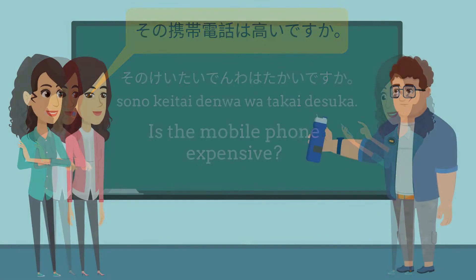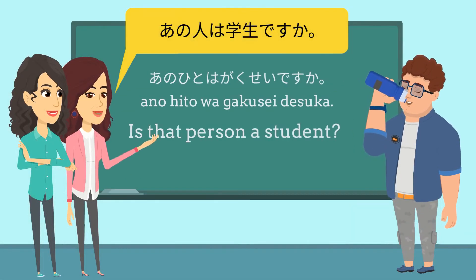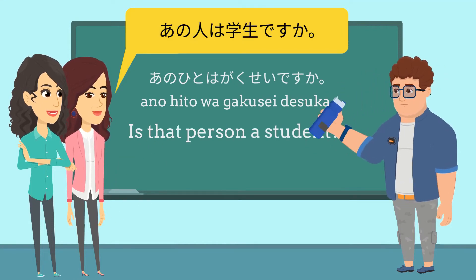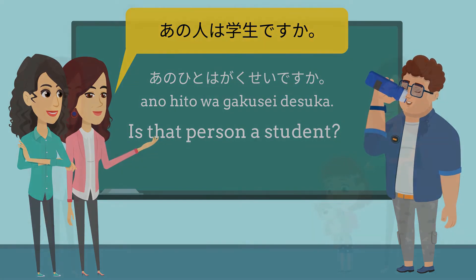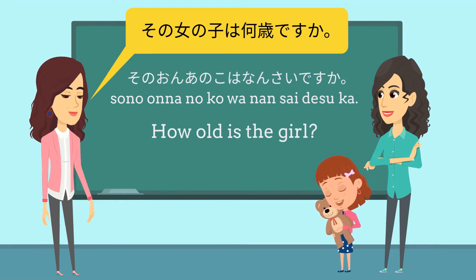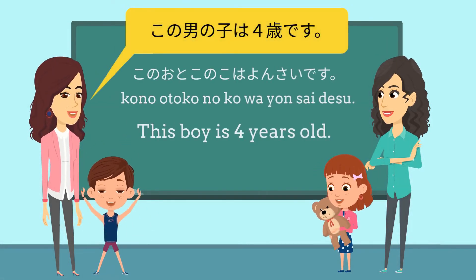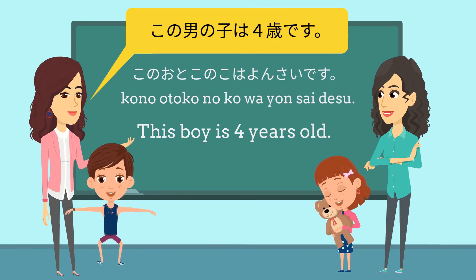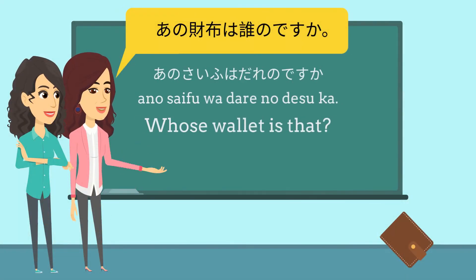That person is a student. That woman — what age is she? This man is forty. Who is that?